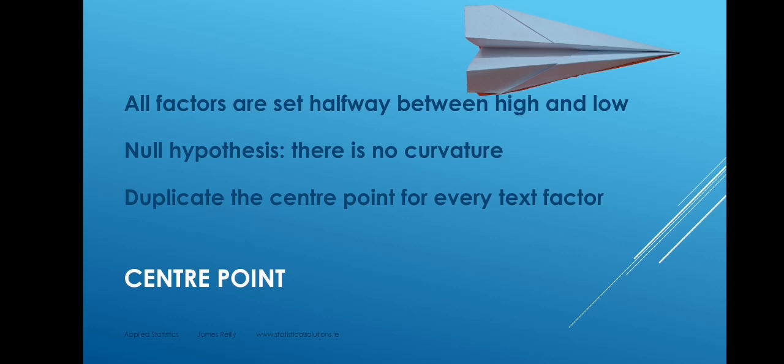All factors are set halfway between high and low, and there's a null hypothesis that there's no curvature. However, if we have a text factor — for example, the person who throws the paper airplane, say Sean or Ben — there is no halfway point between those text levels. Where we have numbers, we can easily identify a center point, but with a text factor there is no halfway. So both Sean and Ben must throw a paper airplane set halfway between the high and low settings for all of the numeric factors, effectively duplicating the center point.